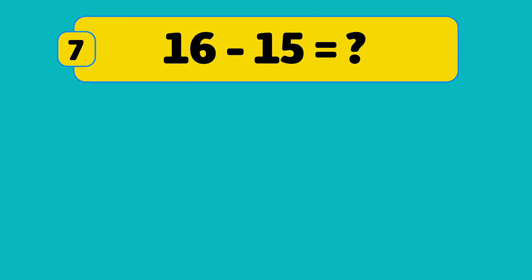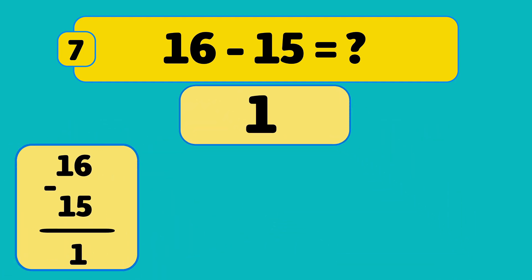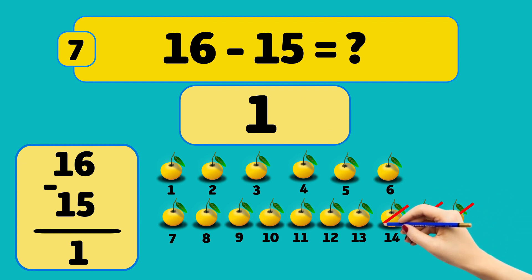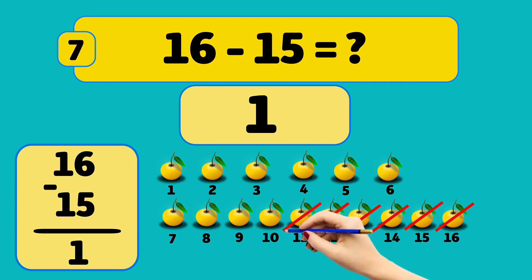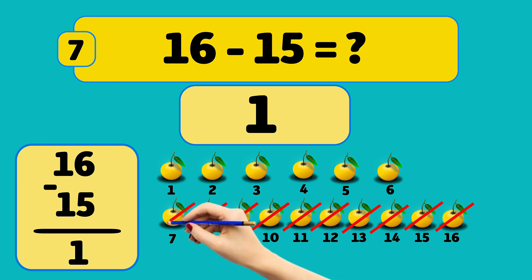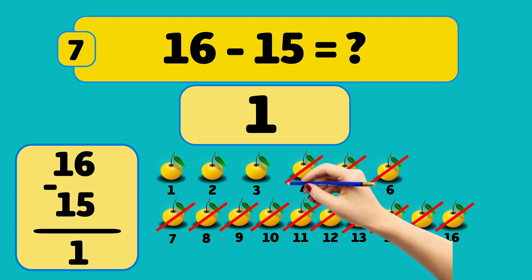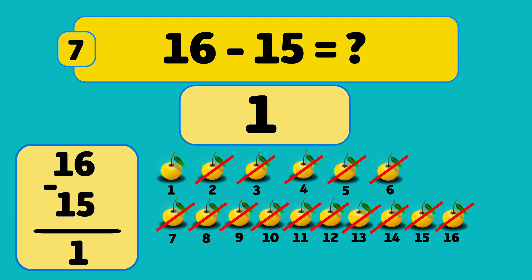What is 16 minus 15? The answer is 1. We start with 16 oranges and remove them one by one: 16, 15, 14, 13, 12, 11, 10, 9, 8, 7, 6, 5, 4, 3, 2. Now we have 1 orange left.